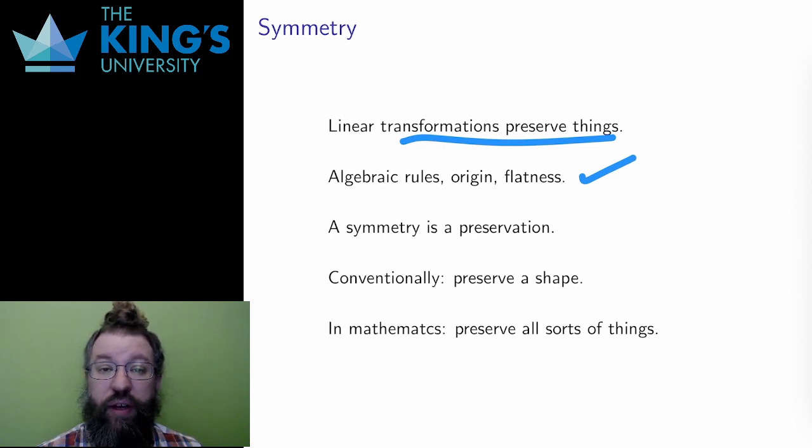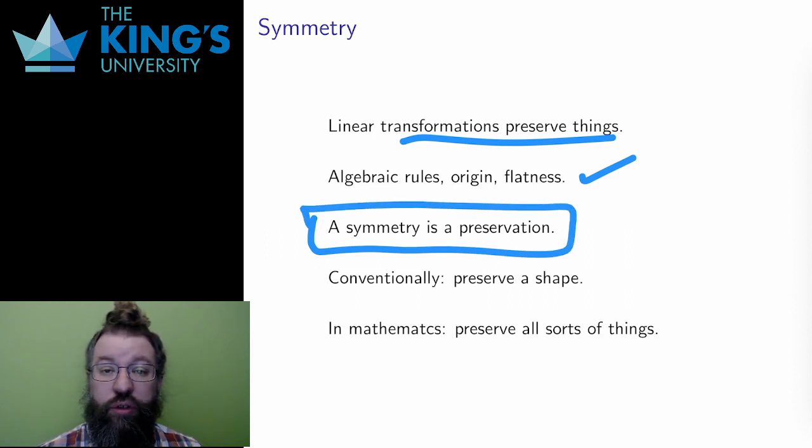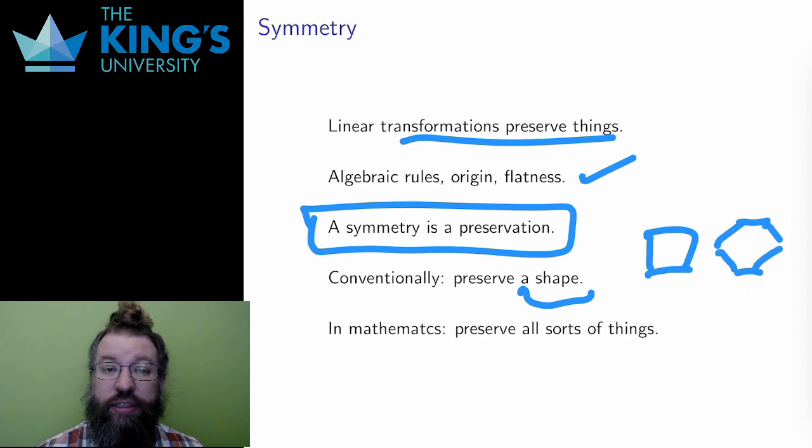I said at the start of this course that symmetry would be a major theme. Symmetry means preservation. Something is preserved under a transformation. In colloquial usage, symmetry is about preserving a shape, the symmetries of a square or a hexagon. In mathematics, symmetry can be about preserving almost anything: a shape, a property, an algebraic operation. Linear transformations are symmetries because they preserve algebraic operations and geometric flatness.